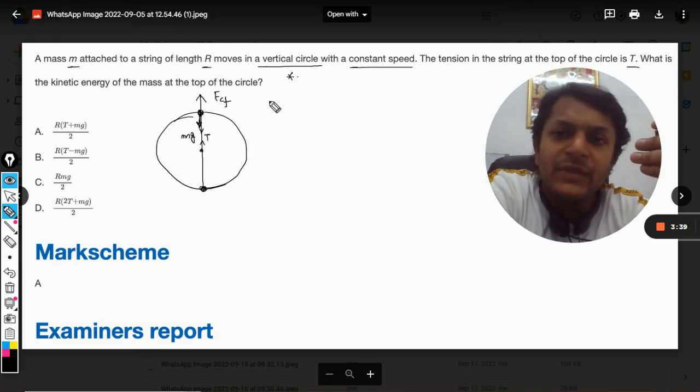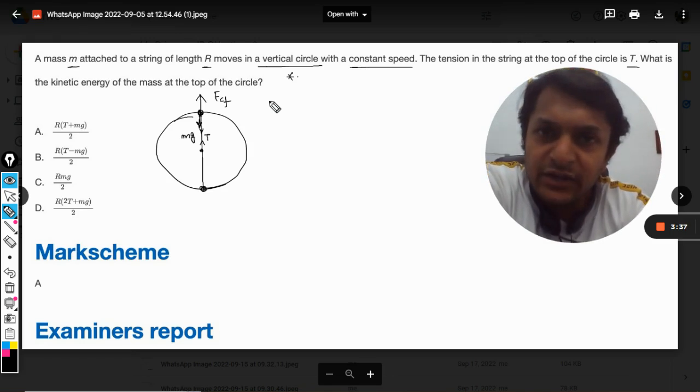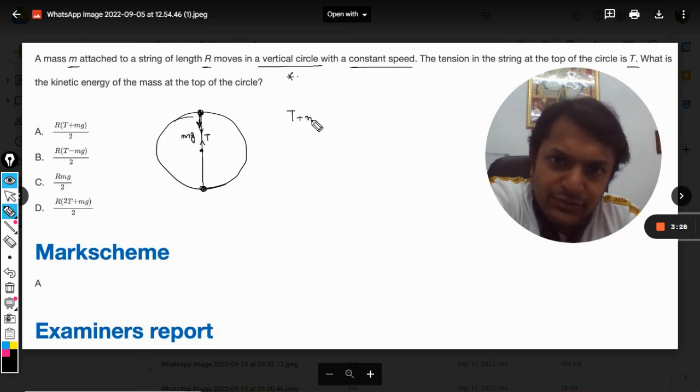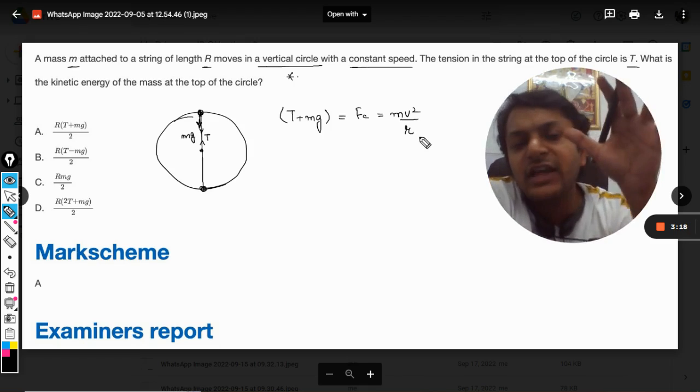your school taught you by using centripetal force. So in that case we will not be showing this, and we will say that the total force here, that is T plus mg, will be equal to the centripetal force. Now the centripetal force will be mv² by R. The same equation can be